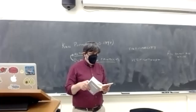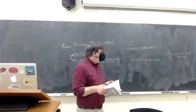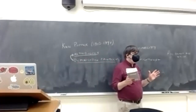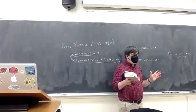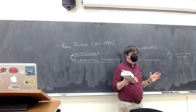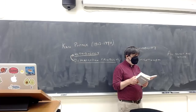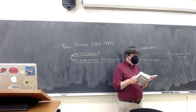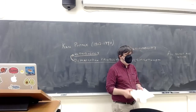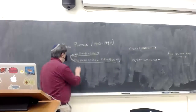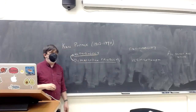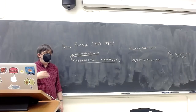Popper's response on page 20 is: 'I must admit the justice of this criticism.' If I'm determined to hold onto a theory, no kind of evidence can force me to give it up. 'I must admit the justice of this criticism, but I may not therefore withdraw my proposal to adopt falsifiability as a criterion of demarcation. For I'm going to propose that the empirical method should be characterized as a method that excludes precisely those ways of evading falsification which are logically possible.' Yes, you can do all those things — but if you do, you're not following the empirical scientific method.